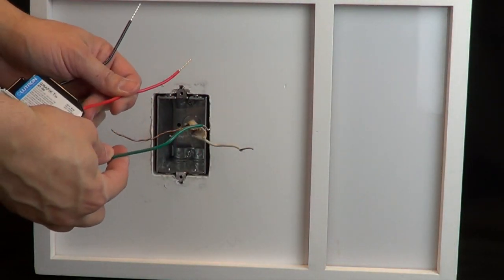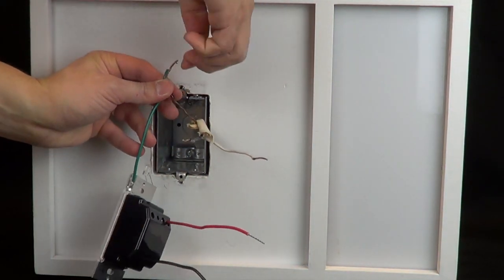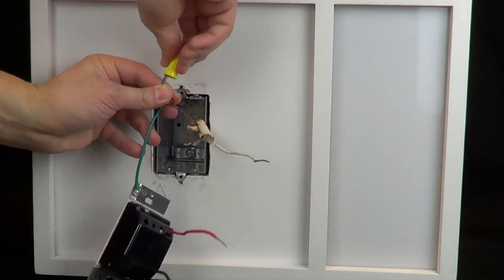Use a wire cap to connect the ground wire to the green wire on your new control. If you do not have ground wire in this wall box, simply place a cap on the green wire on the control.